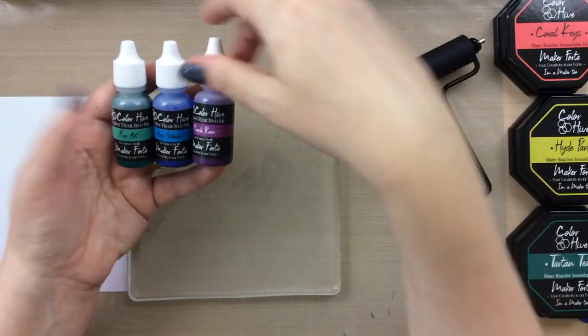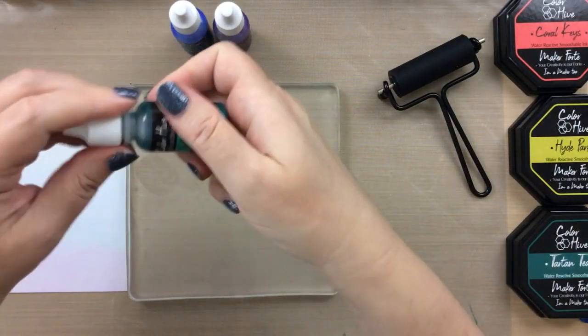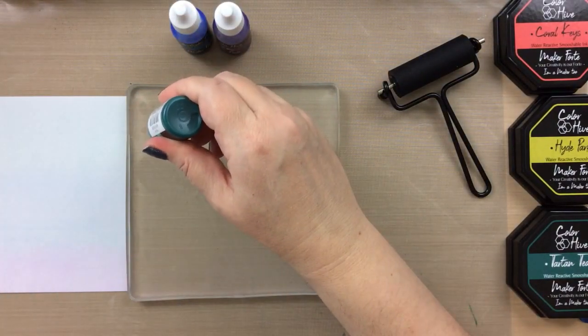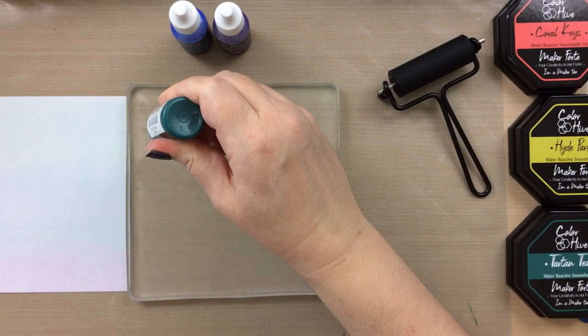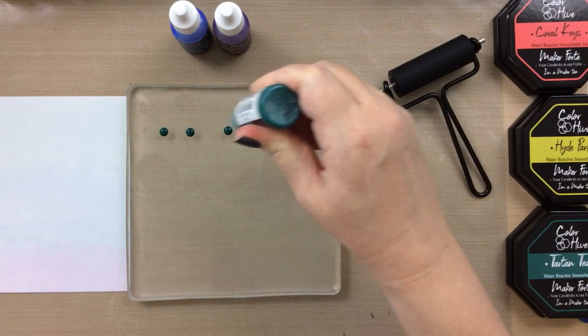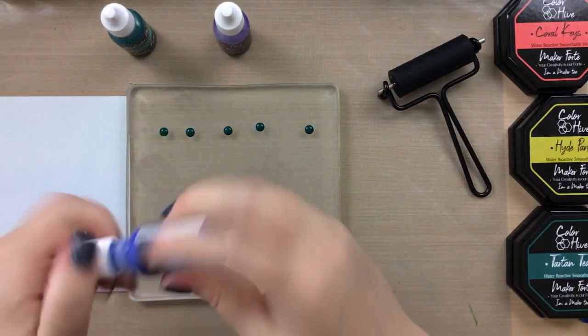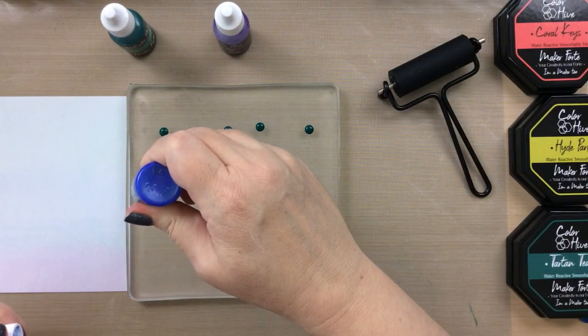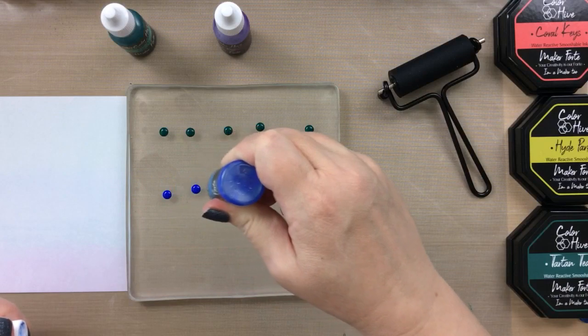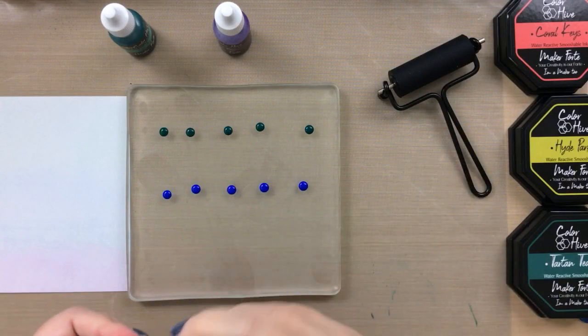Let's try it with the re-inkers now. I'm using the exact same three colors. This is pop art, one of my favorites by the way. I love pop art. It's kind of a greenish blue color. It's really pretty. Then we've got acid wash, which is a really great blue. And the last color is the purple rain.